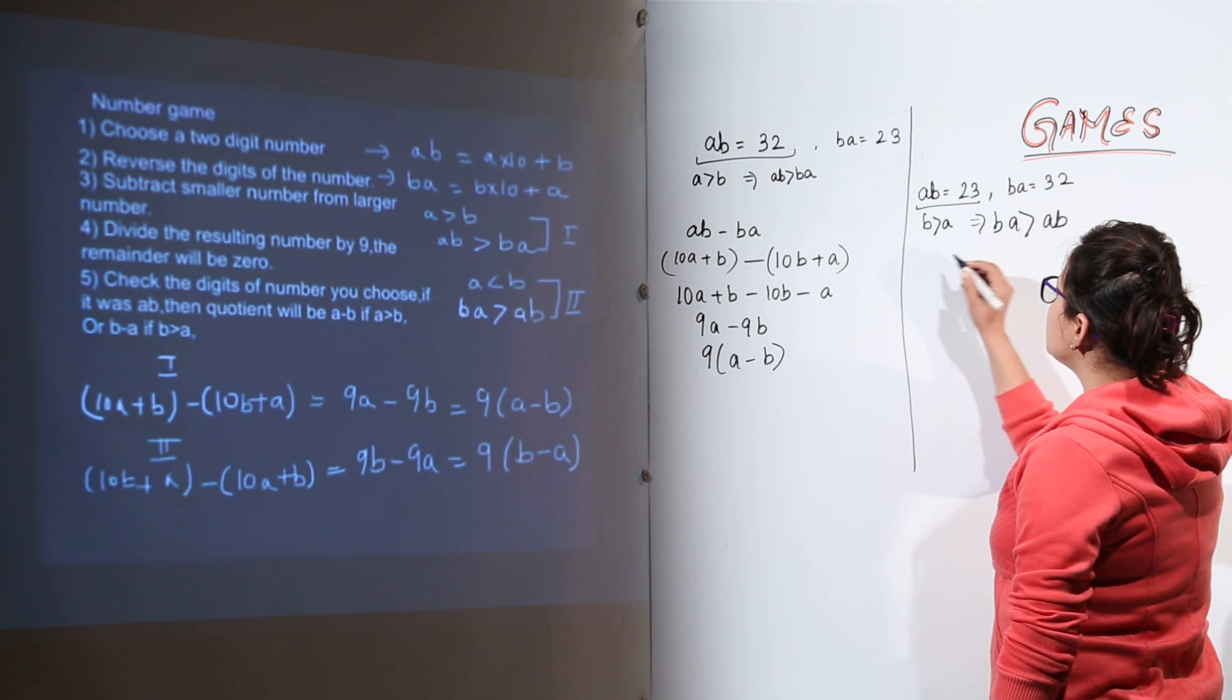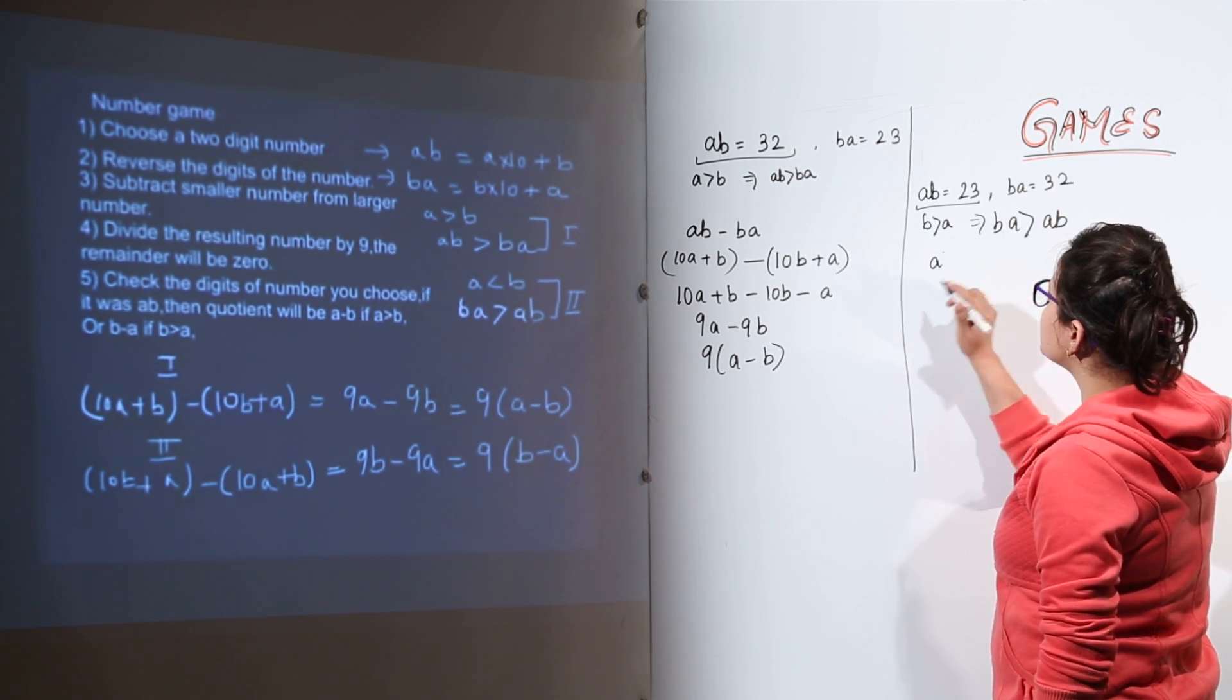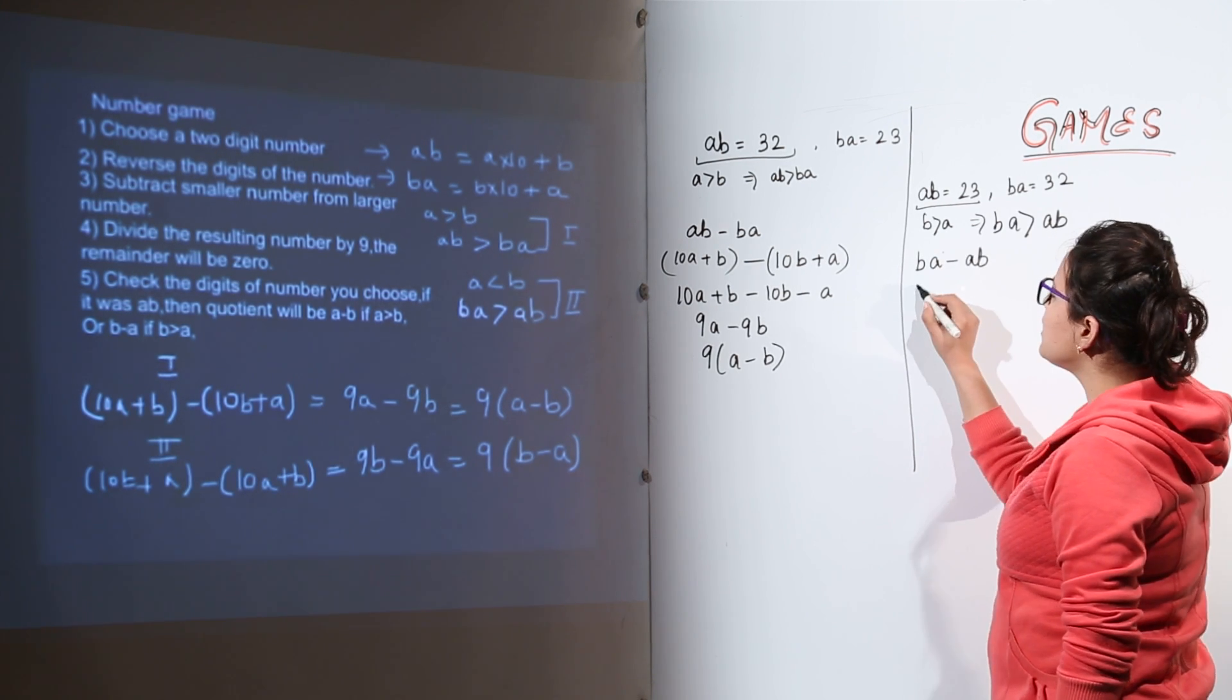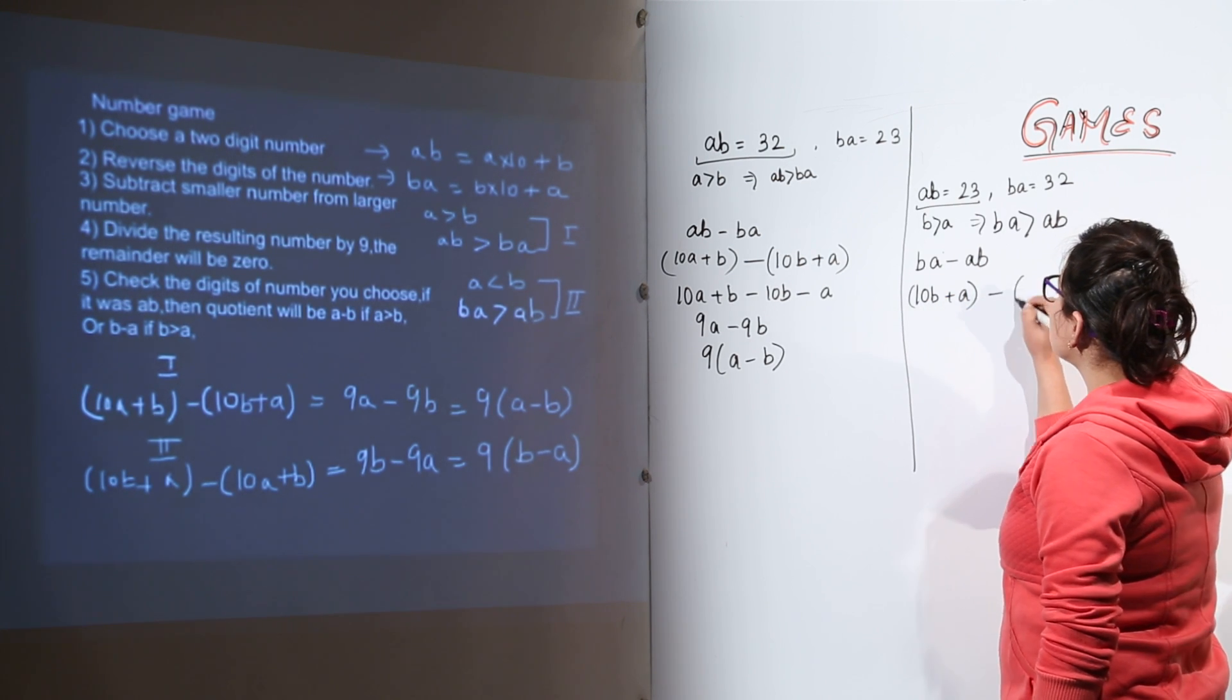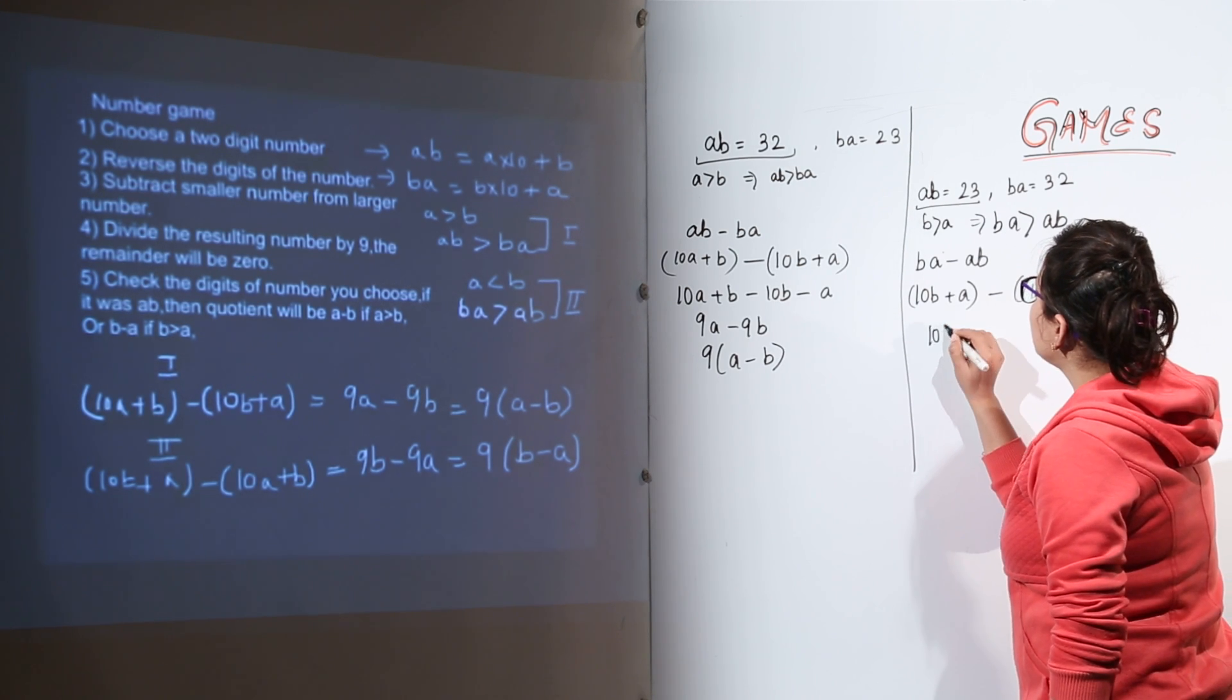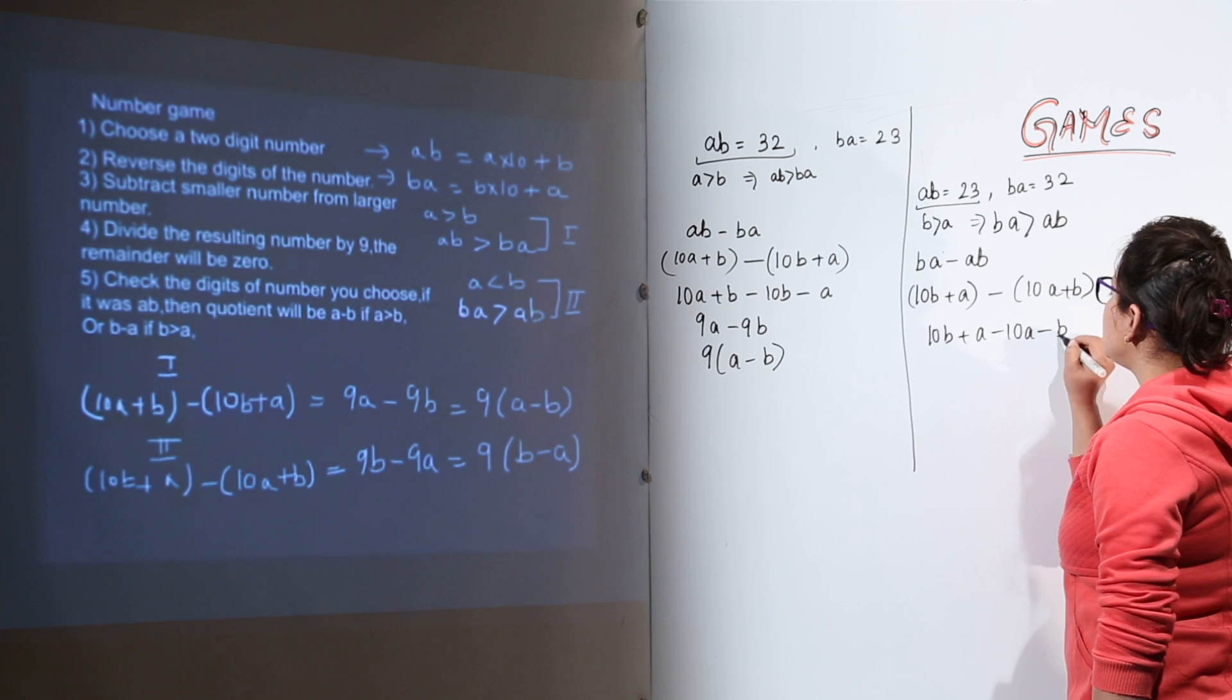Now obviously we will subtract the smaller number from the larger number. So we will do BA minus AB. Now BA can be written as 10B plus A minus 10A plus B. What do we get? 10B plus A minus 10A minus B.